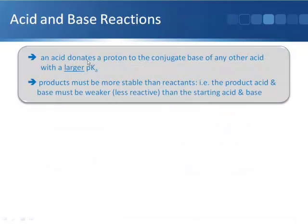So an acid donates a proton to the conjugate base of any other acid with a larger pKa. So an acid can donate a proton to the conjugate base of a weaker acid. And the products of this reaction must be more stable than the reactants. So another way I think of that is the product acid and base of a reaction must be weaker acids and bases than the starting materials.